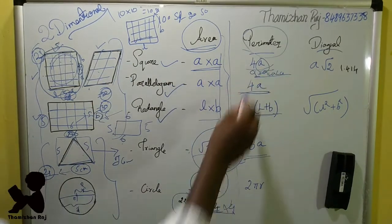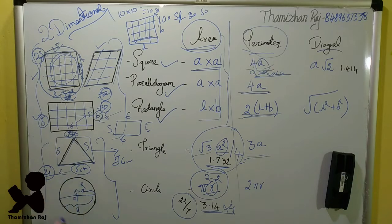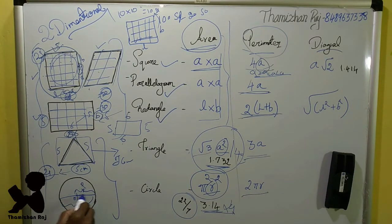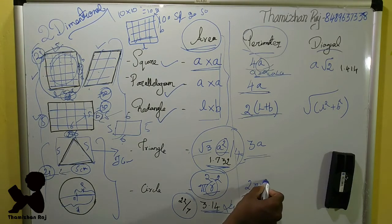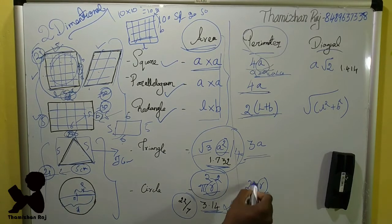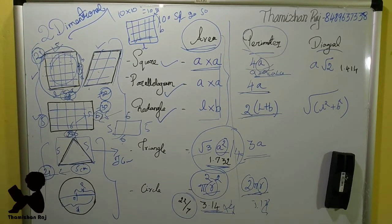Now, this circle's circumference is given by 2 into pi times r. R is the value of r. This is the r value. This r is the value of 3.14. This is the value of 3.14. This is the value of 2 into 3.14. This is the value of r — this is the round of 1.